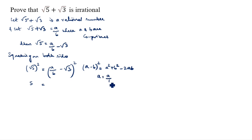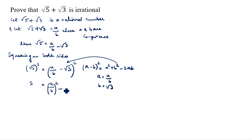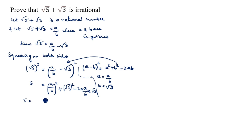Here, a is equal to a by b, and b is equal to root 3. So we split: a square is a by b whole square, plus b square is root 3 whole square, minus 2 into a by b into root 3. So 5 equals a square by b square plus 3 minus 2 root 3 times a by b.